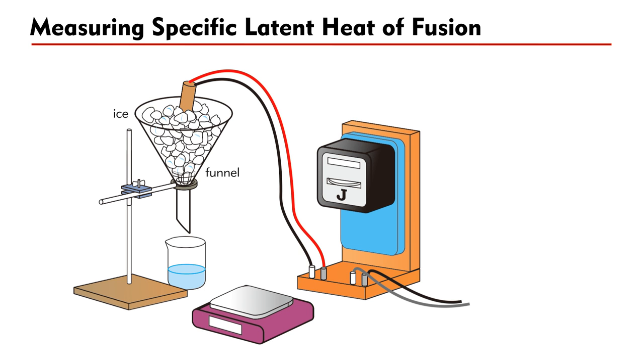We can use a funnel to hold the ice, an immersion heater to melt the ice, and a joule meter to record the latent heat Q. The melted water is then collected in a beaker and an electronic balance is used to record the mass m of the melted water. The specific latent heat of fusion is then obtained by simply dividing Q by m.